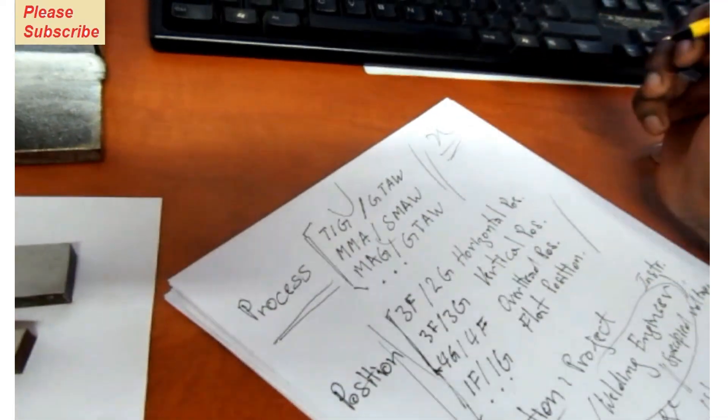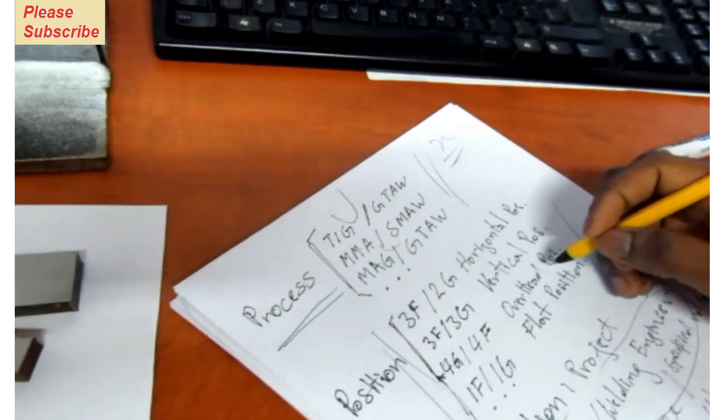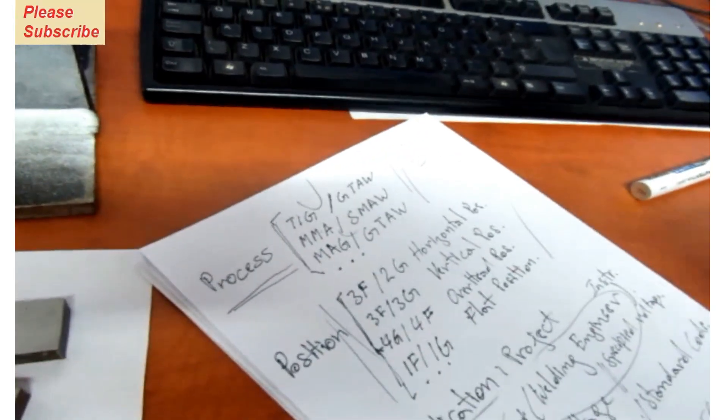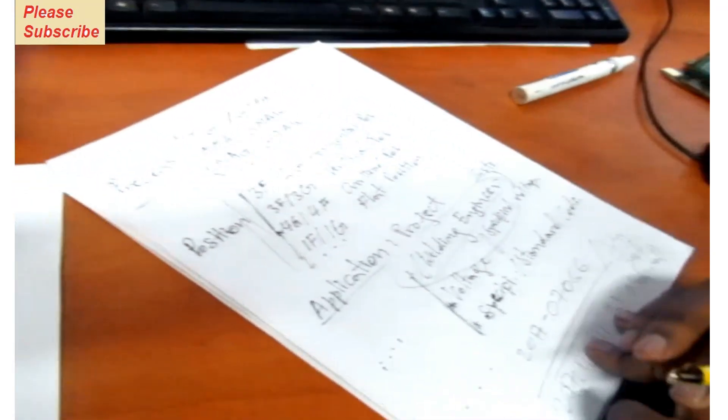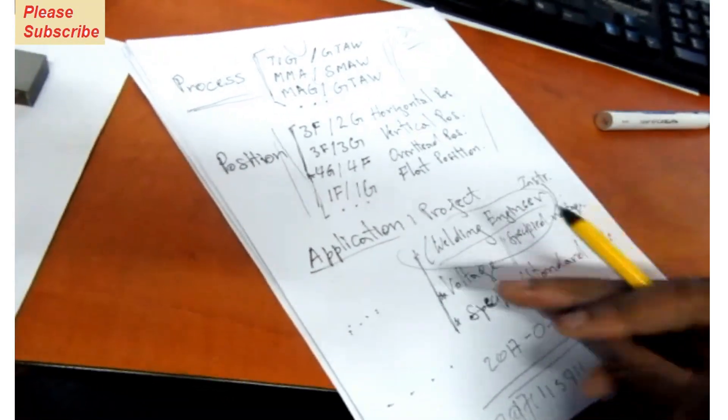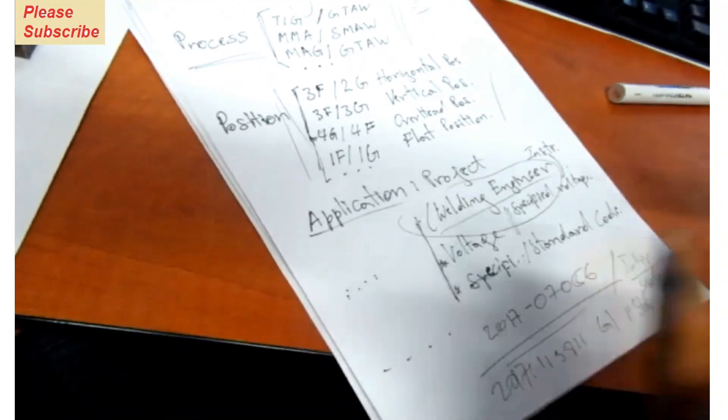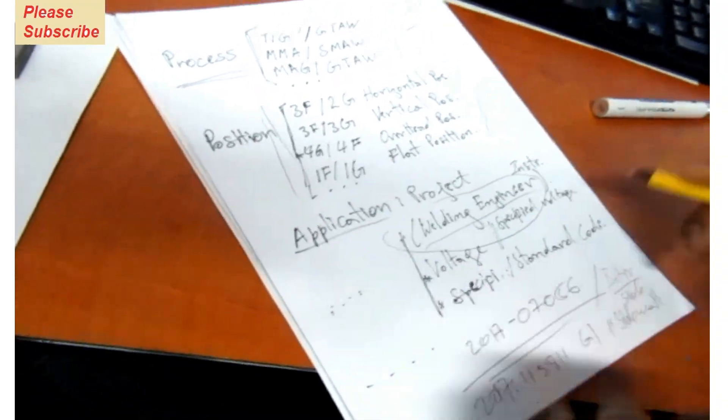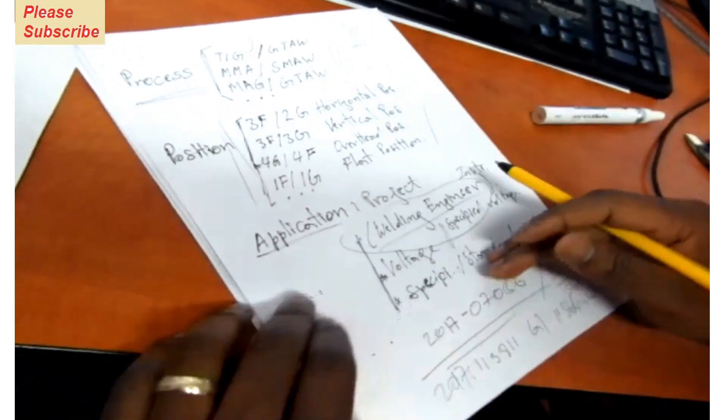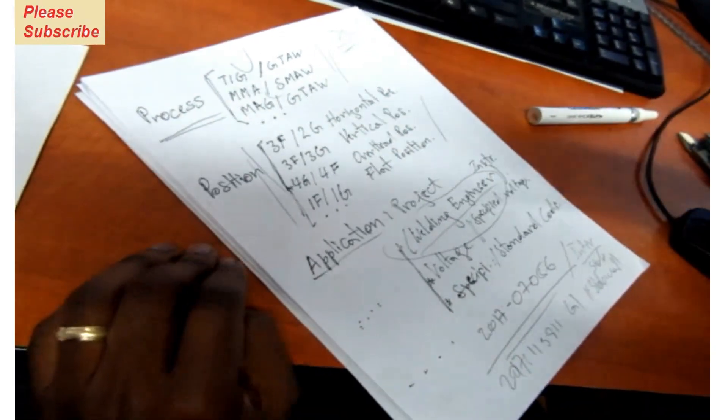So first of all, let's say we have a Project X - that's the name of the project. From that project we need a welder to be part of it. So what we do is we go to the welding engineer. The welding engineer gives us what he wants.